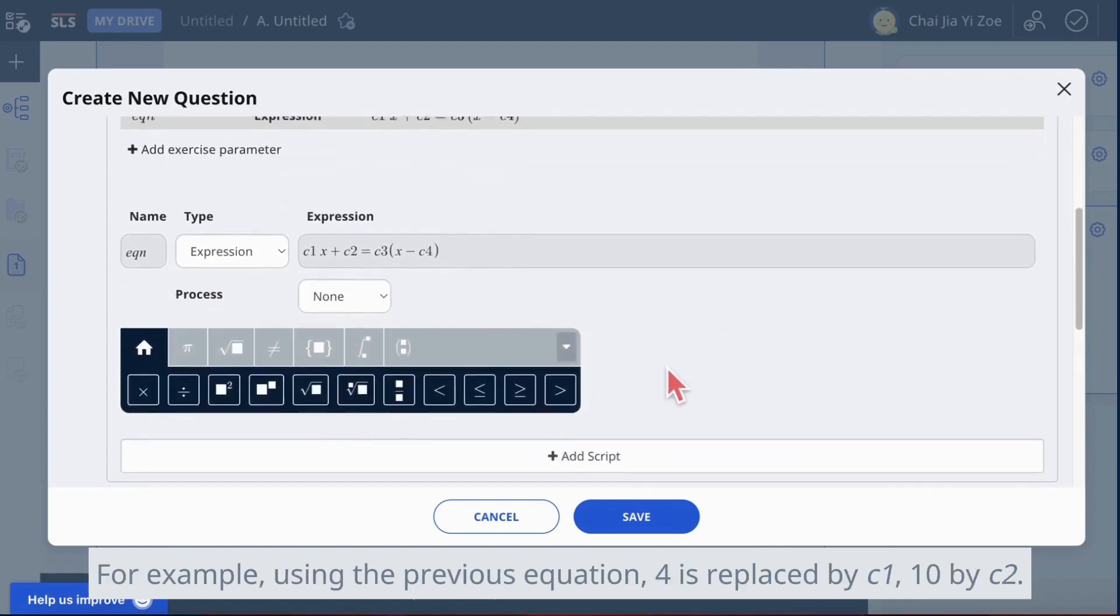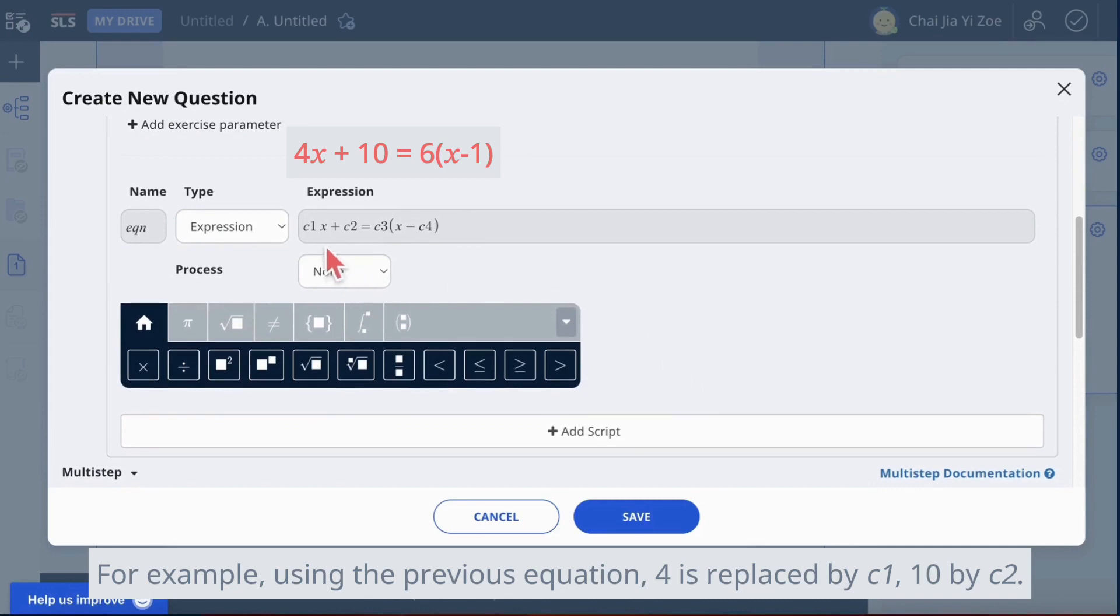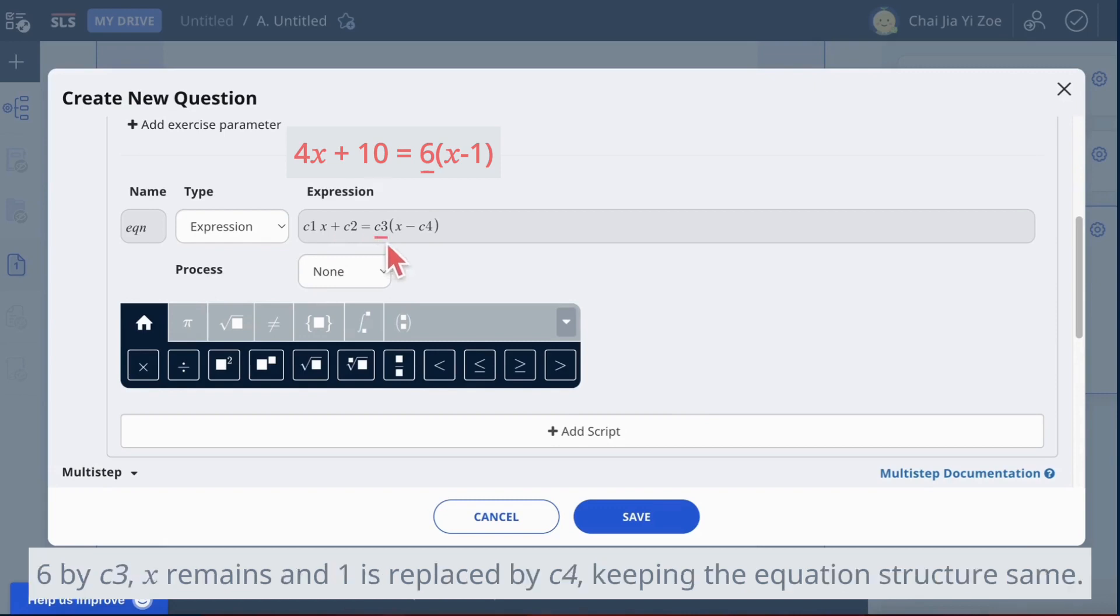For example, using the previous equation, 4 is replaced by c1, 10 by c2, 6 by c3. X remains, then 1 is replaced by c4, keeping the equation structure the same.